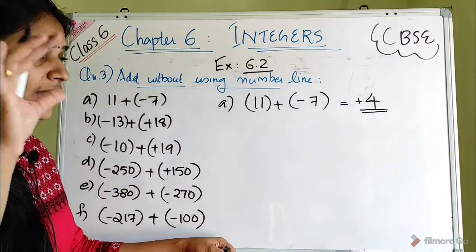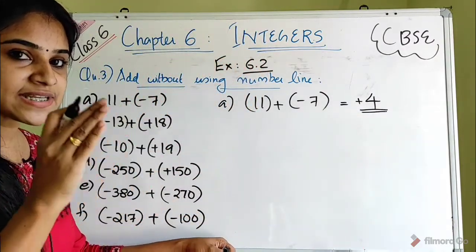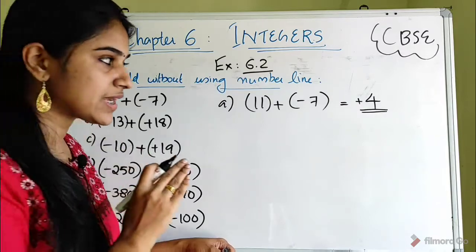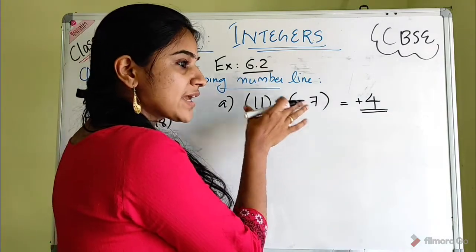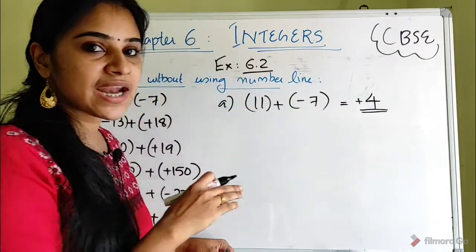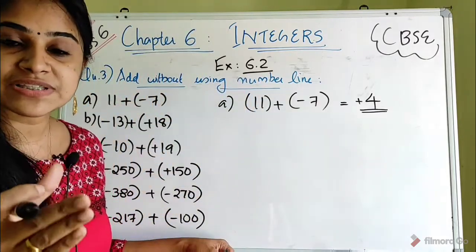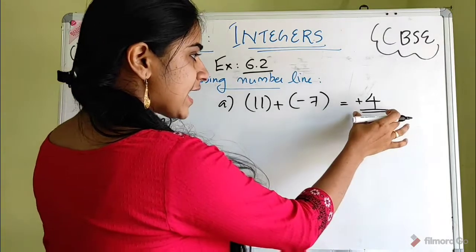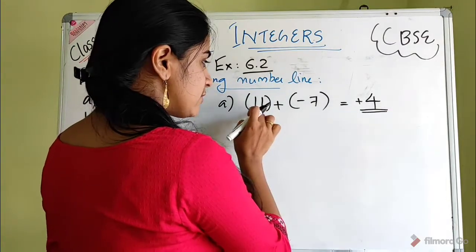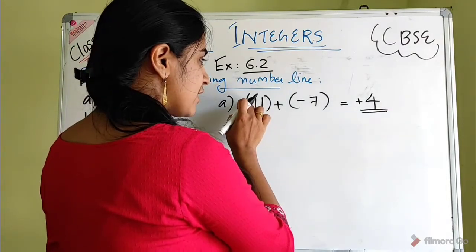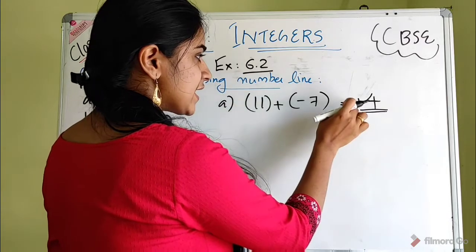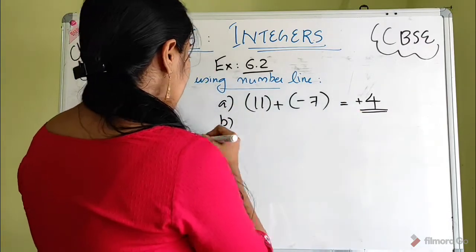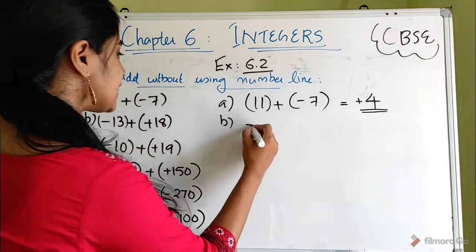Clear? When we have different signs, we check which number is bigger. We take the difference, and the sign of that bigger number becomes the sign of the answer.